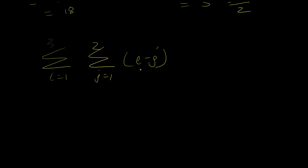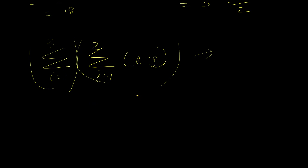A practice problem is left for you: solve the double summation of (i minus j) with appropriate bounds. For exams, small numbers may allow direct expansion, but it's always worth knowing the formulas for larger values. That concludes this video and the first chapter. The next video will start a fresh chapter on integers and matrices.